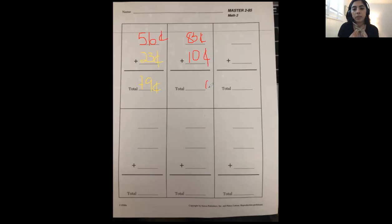Good. We put our cent sign down here. Three plus zero equals three, and eight plus one equals nine.